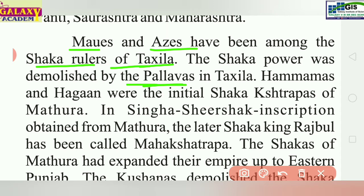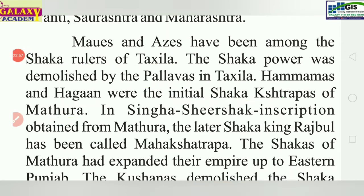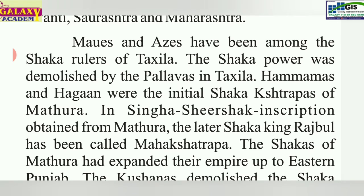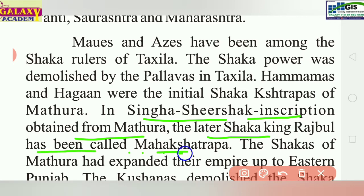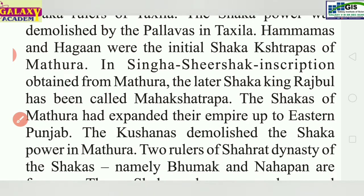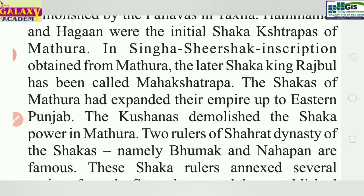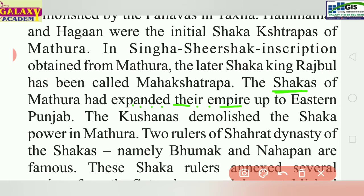The Shakas of Mathura had expanded their empire up to eastern Punjab. The Kushanas then demolished the Shaka power in Mathura. Of the Shakas of Saurashtra dynasty, Bhoomak and Nahapana are famous. These Shaka rulers annexed several regions from the Satavahanas and established their rule in Maharashtra, Kathiawar, and Gujarat.